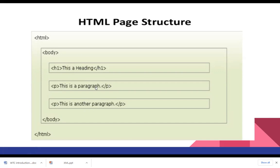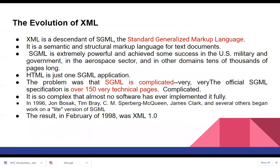Now, what is the need for XML? SGML is used for meta languages with a tag-based structure, but it is very complicated — its specifications run to 150 technical pages. HTML is just for presentation, but when we need to store data in the form of a meta language, we need another markup language.